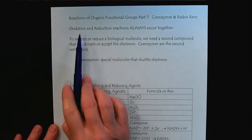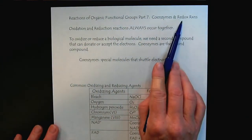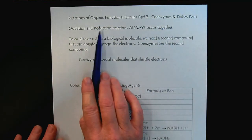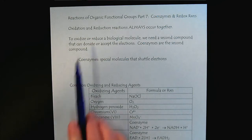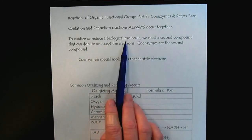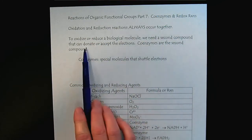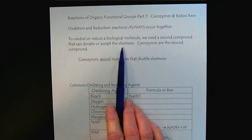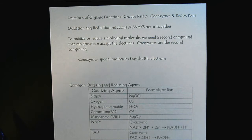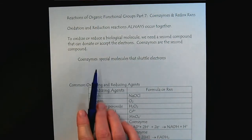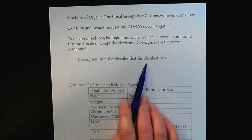We call them redox reactions because oxidation and reduction reactions always occur together. So to oxidize or reduce a biological molecule, we need a second compound that can donate or accept the electrons. Coenzymes are that second compound — they are special molecules that shuttle electrons.